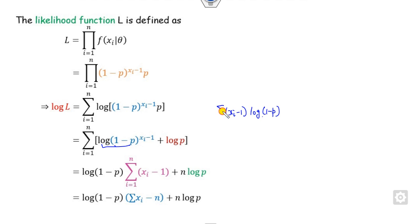Since this part from the summation is independent of i, I can take it outside. Now if you expand them, this summation of x_i minus 1 is here.